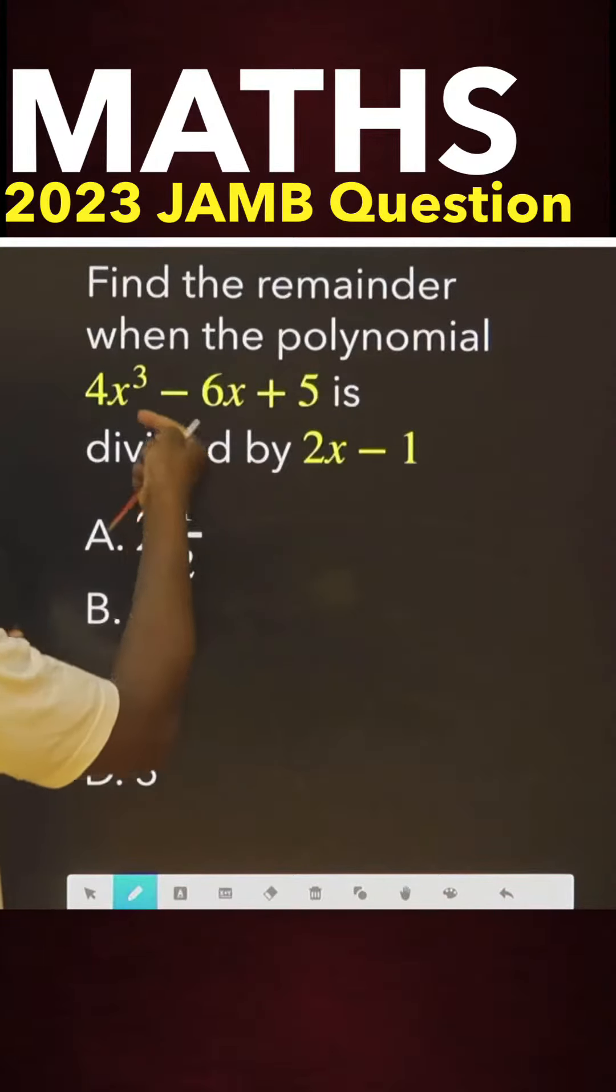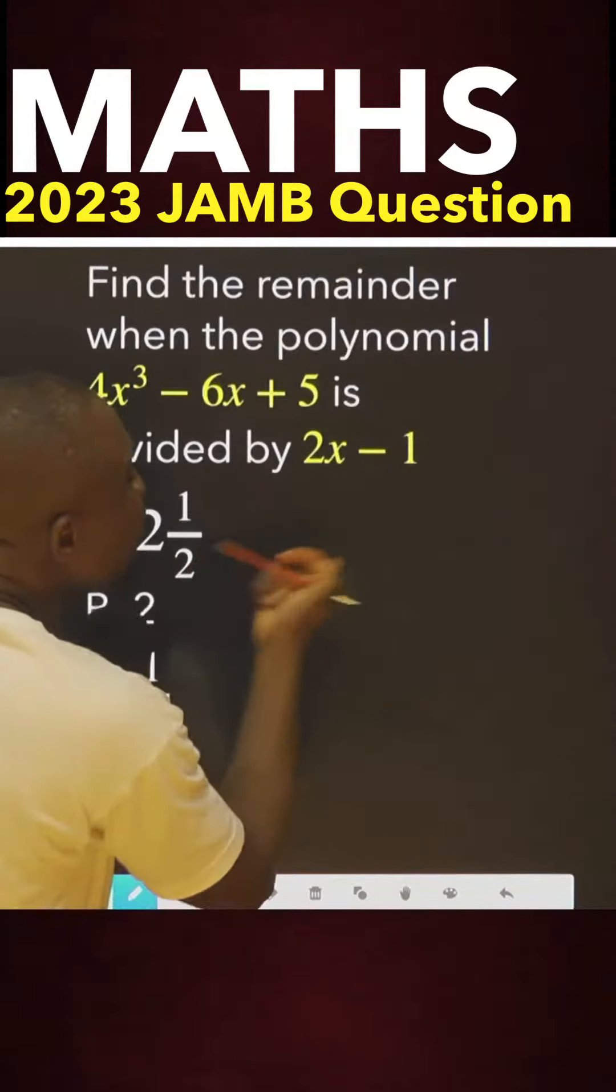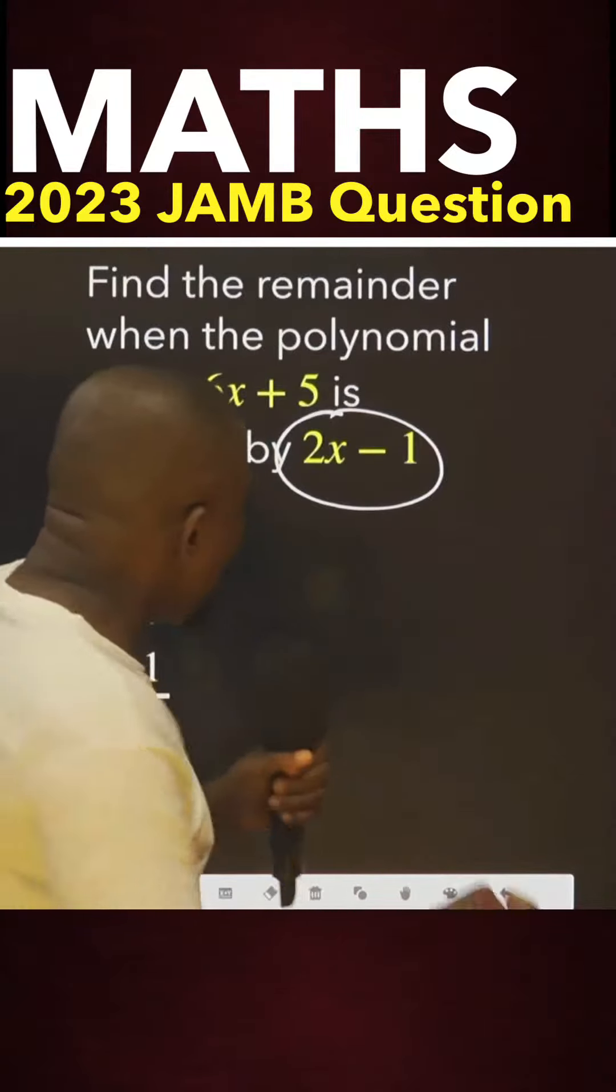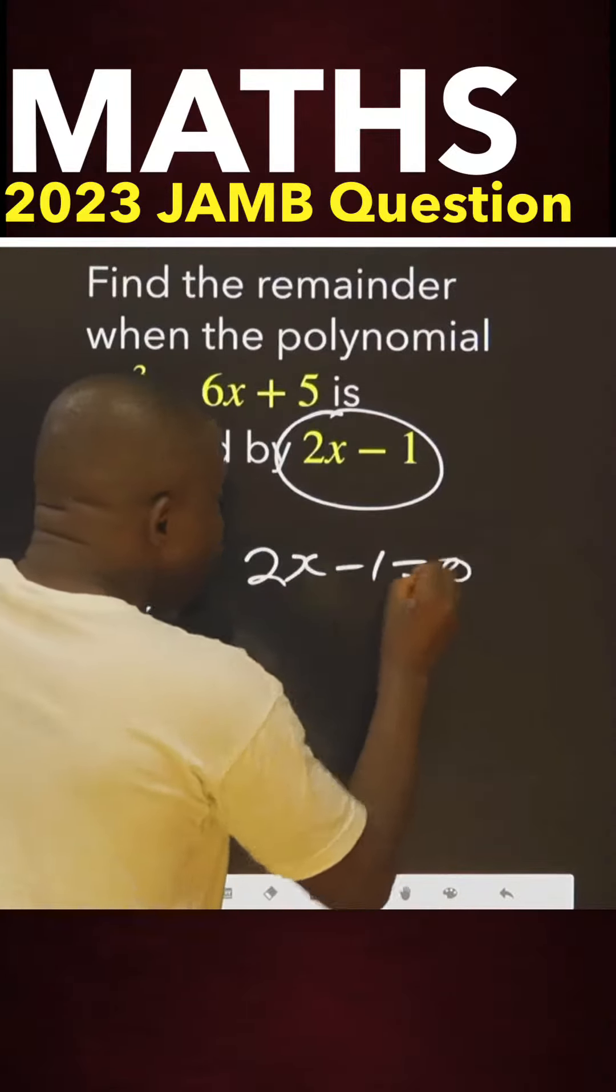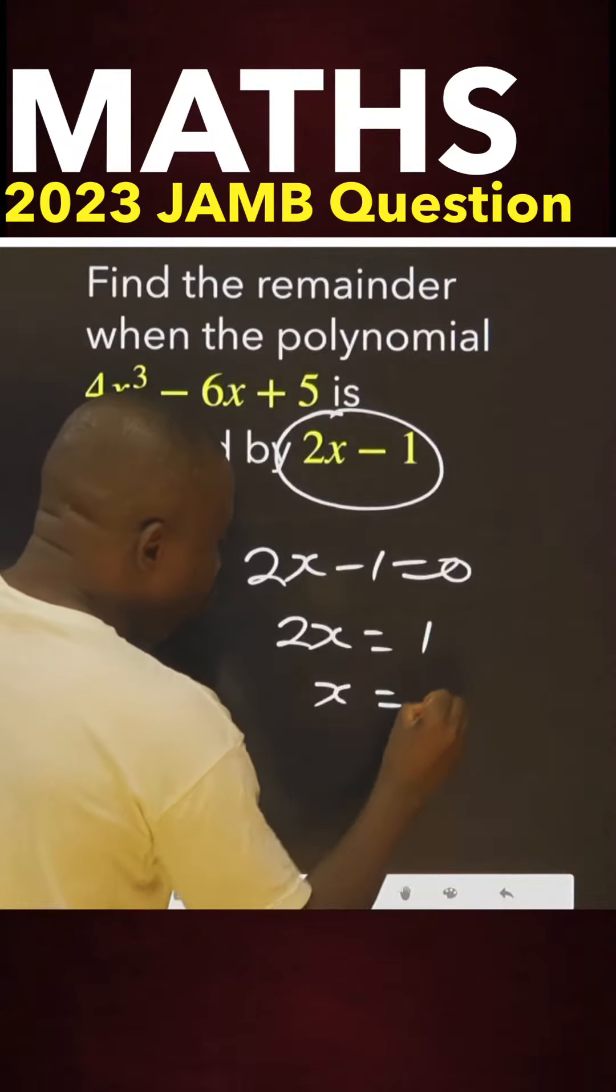the remainder when this polynomial is divided by this. Very simple. It means this, which you are going to use as the divisor, equated to zero to look for x. It means 2x now is equals to 1, x equals to 1 over 2.